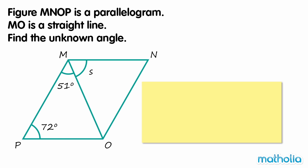Figure MNOP is a parallelogram. MO is a straight line. Find the unknown angle.